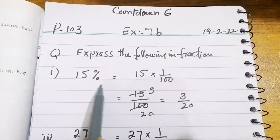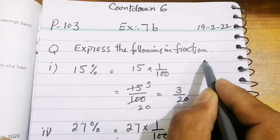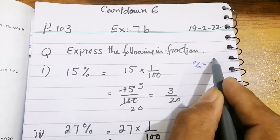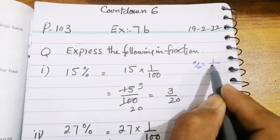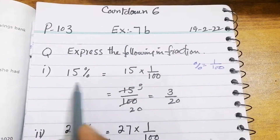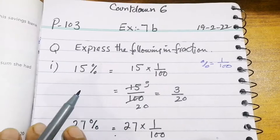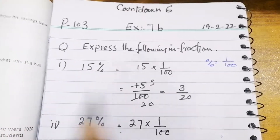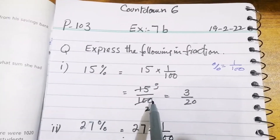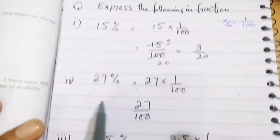15 percent is given. You have to always remember that the percent sign is equal to 1 over 100. So 15 percent we can write as 15 over 100. By cancelling with the table of 5, we get 3 over 20.